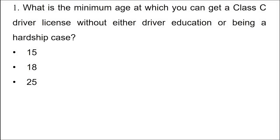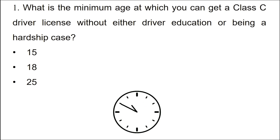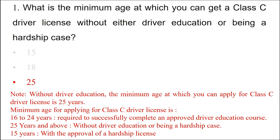Question: What is the minimum age at which you can get a Class C driver license without either driver education or being a hardship case? Option 1: 15. Option 2: 18. Option 3: 25. The answer is option 3: 25. Without driver education, the minimum age to apply for a Class C driver license is 25 years. Ages 16–24 require completing an approved driver education course. Ages 25 and above may apply without driver education. Age 15 requires hardship license approval.